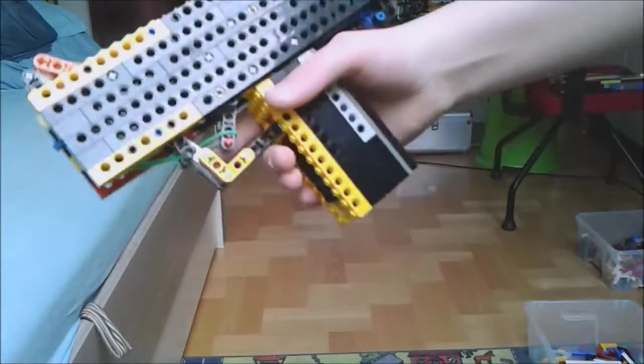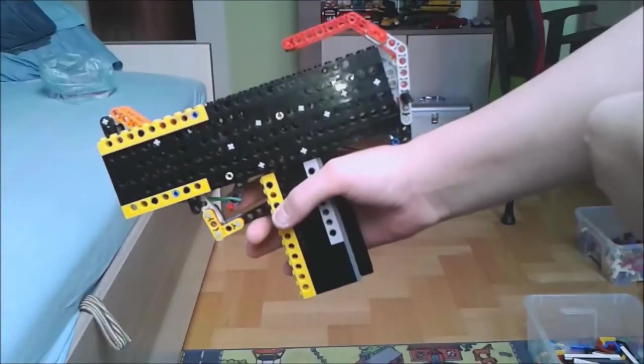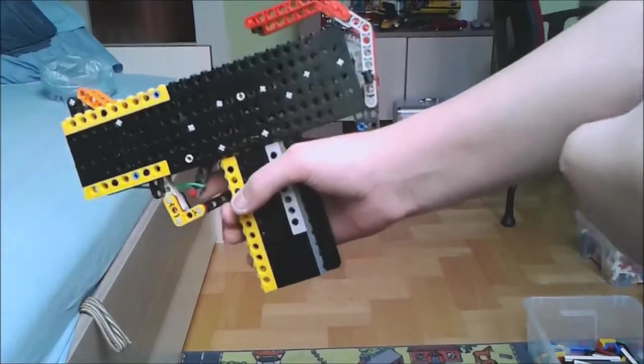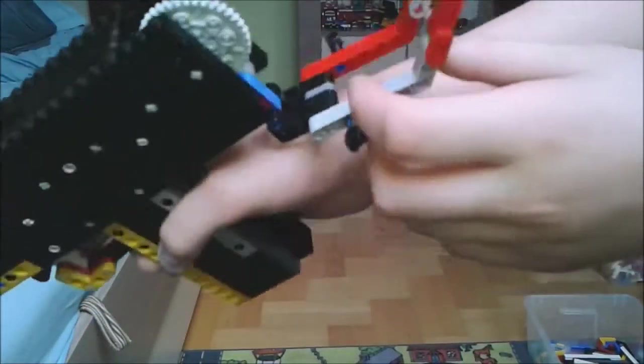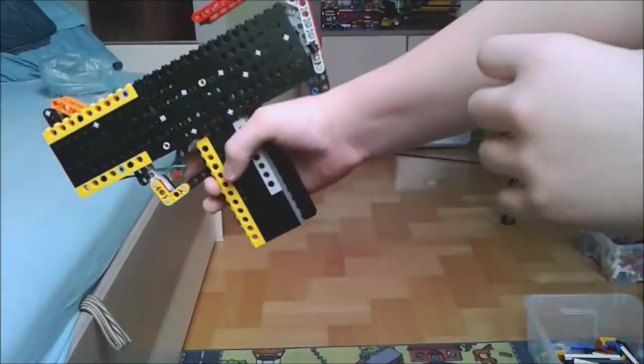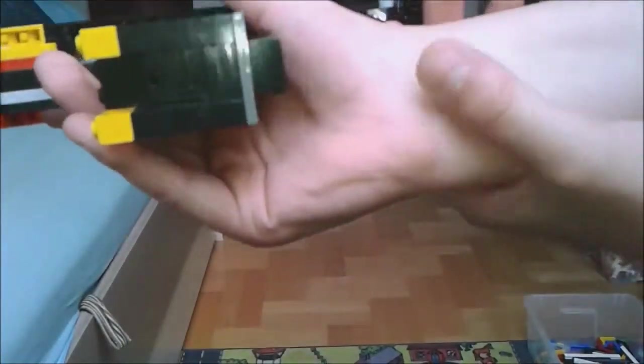Okay, so I use a mechanism from Jack Streat, one-to-one Jack Streat. Okay, so there's a foldable stock and mechanism. I will show you the mechanism, the trigger. Okay, there's a mag hole.